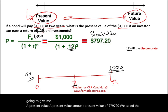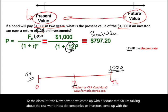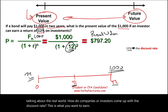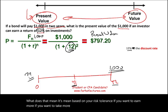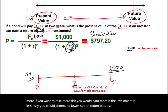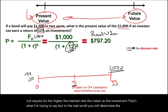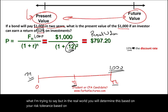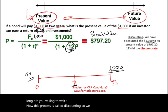We call the 12% the discount rate. How do companies or investors come up with a discount rate? This is what you want to earn based on your risk tolerance. If you want to take more risk, you would earn more. If the investment is less risky, you would command a lower rate of return. The higher the interest rate, the riskier the investment. In the real world, you determine this based on your risk tolerance and your time horizon — how long are you willing to wait. This process is called discounting; we have discounted the $1,000 to its present value.